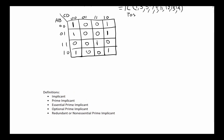Now focusing on minimization: when working with product of sum, we look for zeros rather than ones. We discussed implicants, prime implicants, essential prime implicants, optional prime implicants, and redundant prime implicants for sum of products — the same concepts apply here but for zeros. Group the largest possible blocks of zeros, where each block's dimensions are powers of two — either one, two, or four — on each side. We want the biggest blocks we can find.